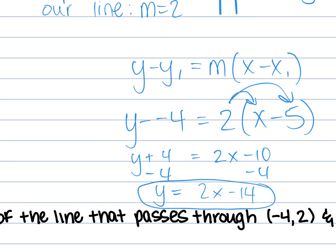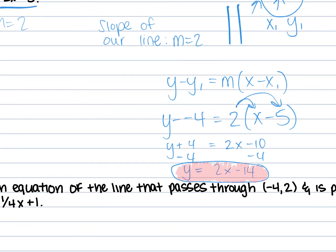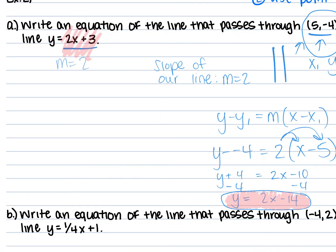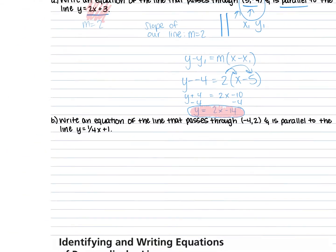That's our final answer. Any questions about that process? We good? Now try part B on your own. Put it in point-slope form. First, get the slope from the original line.